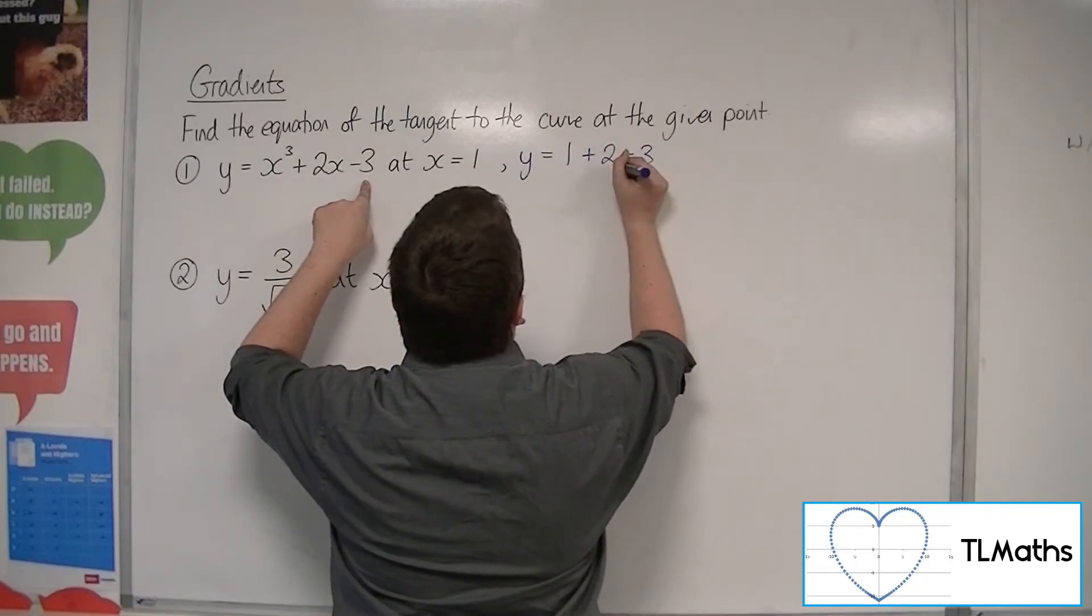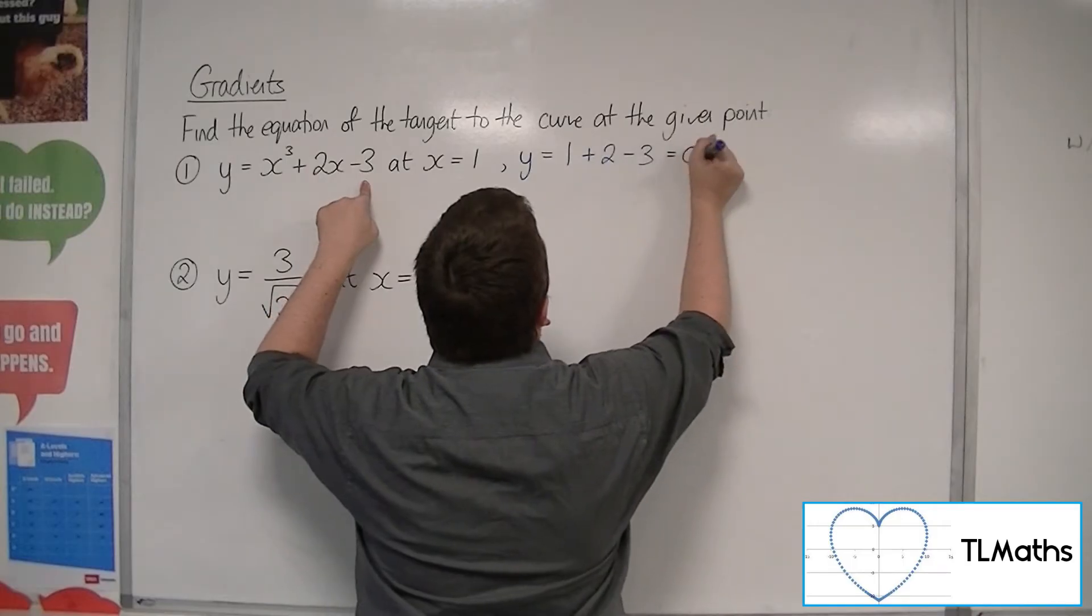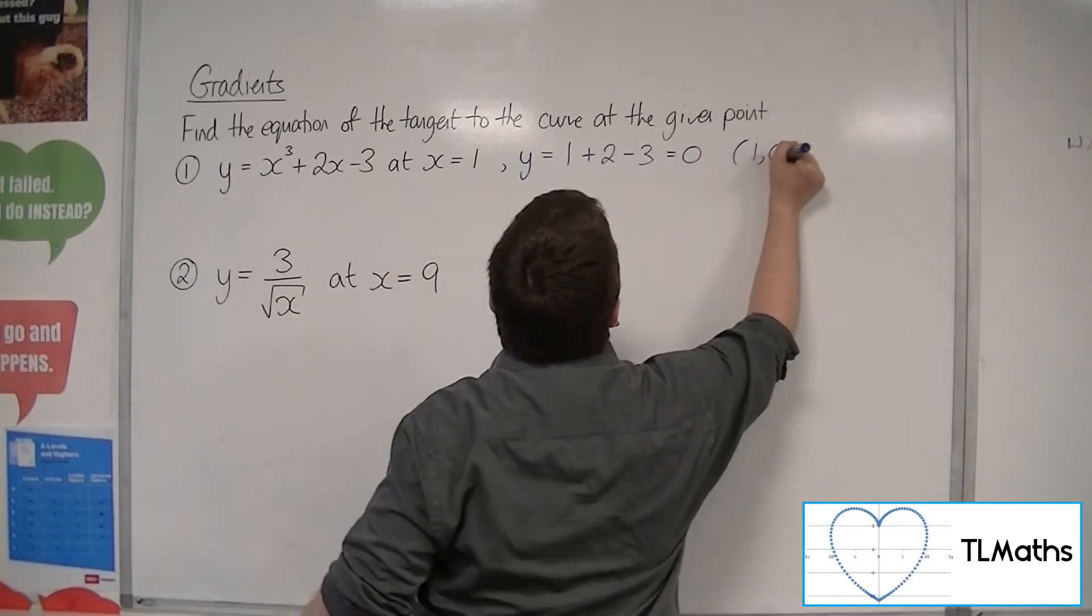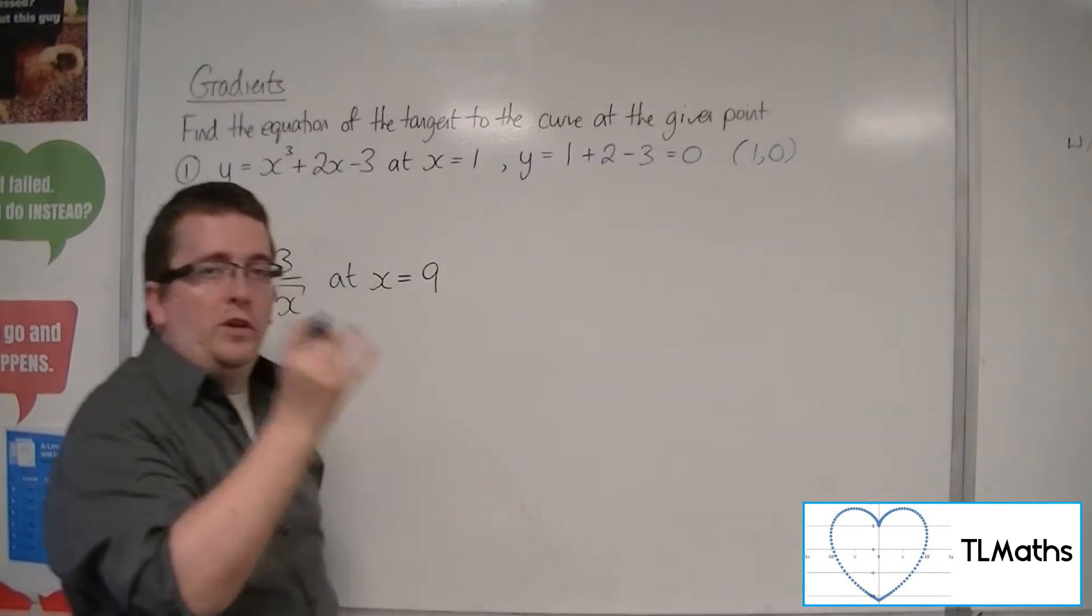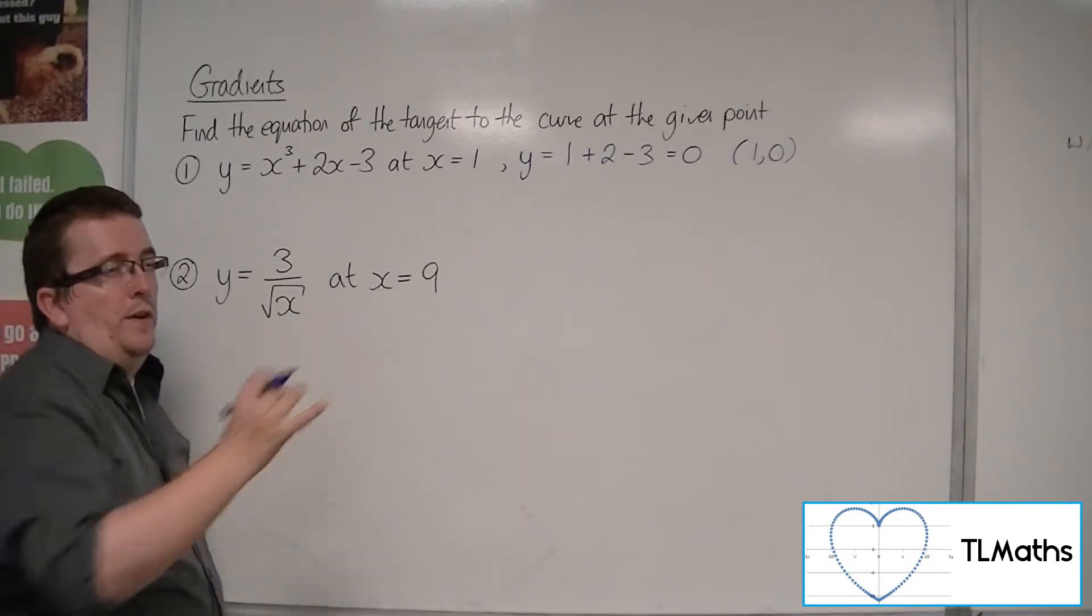So 1 plus 2 is 3, take away 3 is 0. So that is the coordinate of the point on the curve for which I want to find the tangent.